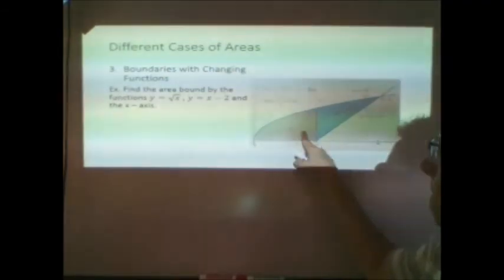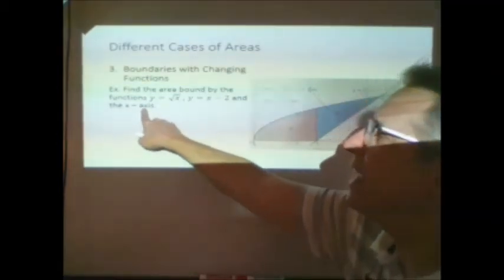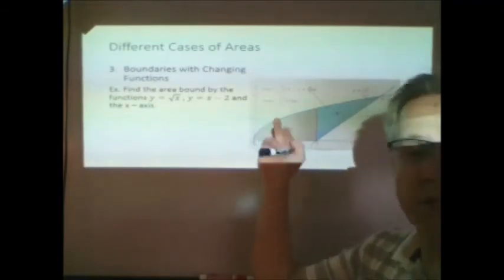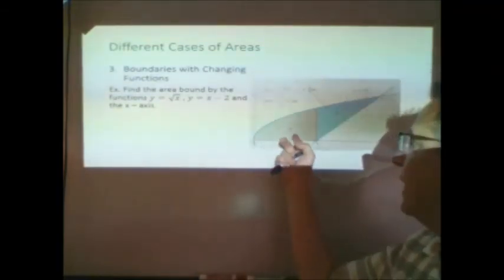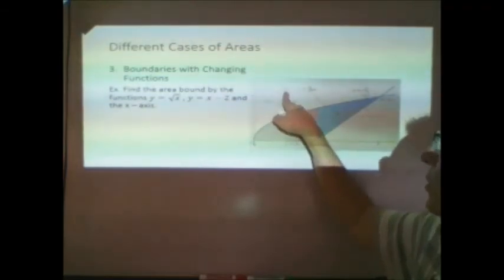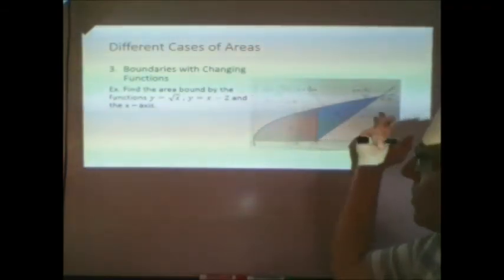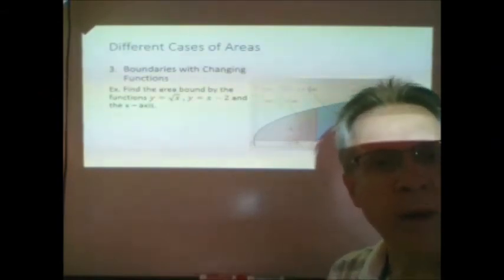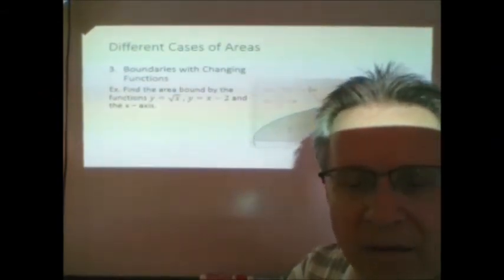And so, this area a would just be the integral of the square root function. And, if you add that area to this one, which would be the integral of the square root function minus the line function, you'd get that total area. And so, watch out where your boundaries are changing.